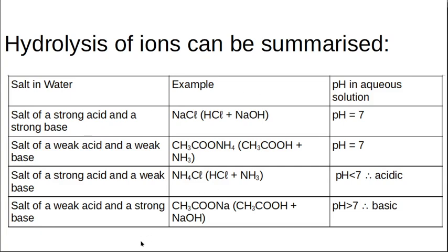The takeaway from hydrolysis of salts: a strong acid and a strong base give a neutral salt at pH 7; a weak acid and a weak base also give a neutral salt, but the reaction doesn't reach a clear endpoint. A strong acid and a weak base give an acidic salt; a weak acid and a strong base give a basic salt.